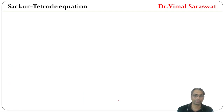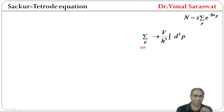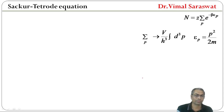For a continuous spectrum of energy, the discrete sum Σp is replaced by (V / h³) · ∫d³p, so we use the continuous integral instead of the discrete sum. Also, Ep = p² / 2m.